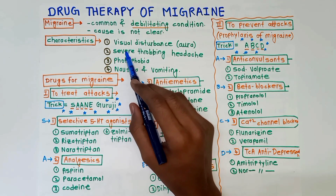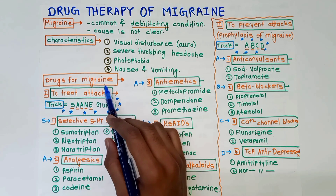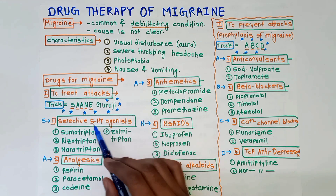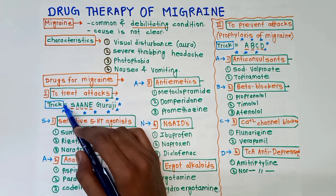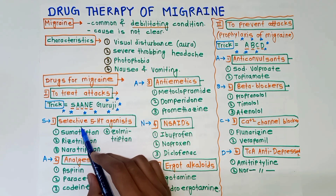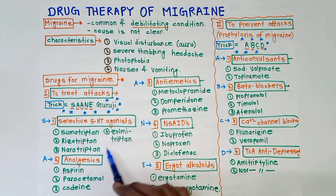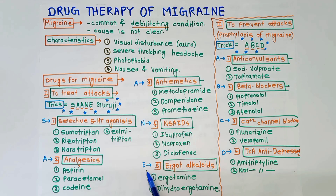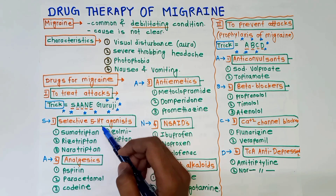Next are drugs for migraine — this is important. To treat attacks, there are five basic drug groups. To remember them, the trick is 'SANE Guruji': S for Selective 5-HT agonists, A for Analgesics, N for aNtiemetics, E for Ergot alkaloids — and also NSAIDs.